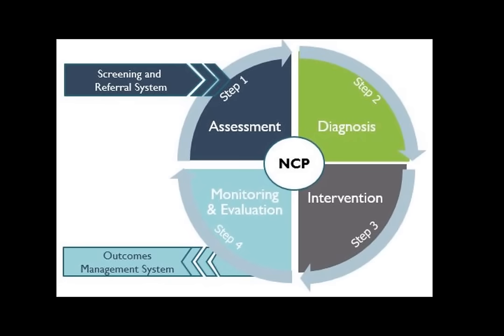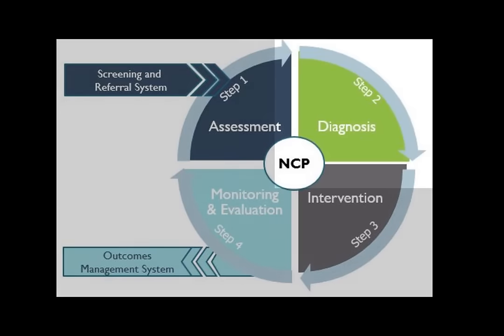In this course we do not really focus on steps three and four, but they flow from steps one and two. If steps one and two are done completely and accurately, we can identify the best interventions and know the criteria to monitor. Now let's go back to step two — nutrition diagnosis — which is identifying and labeling a specific nutritional problem.